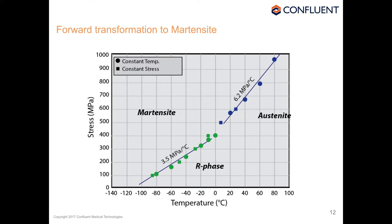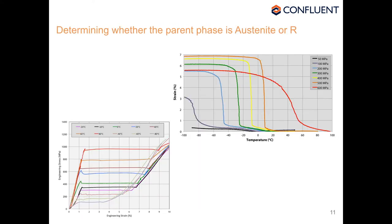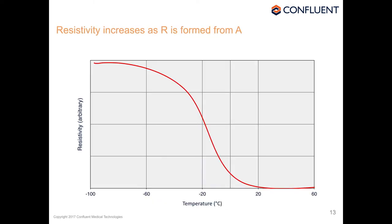This doesn't yet give us the full five-phase diagram, because we still don't have the boundary between austenite and R phase. It's very difficult using stress-strain and strain-temperature tools to determine exactly when the R phase takes over as the parent phase — for example, what's the parent phase on the 500 MPa orange curve? Fortunately, there's another tool: electrical resistivity.